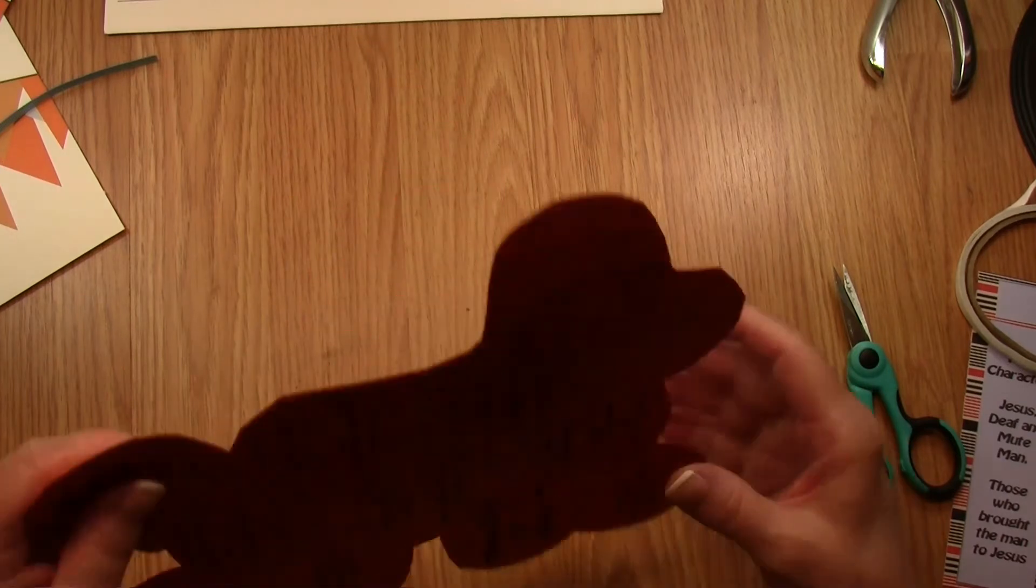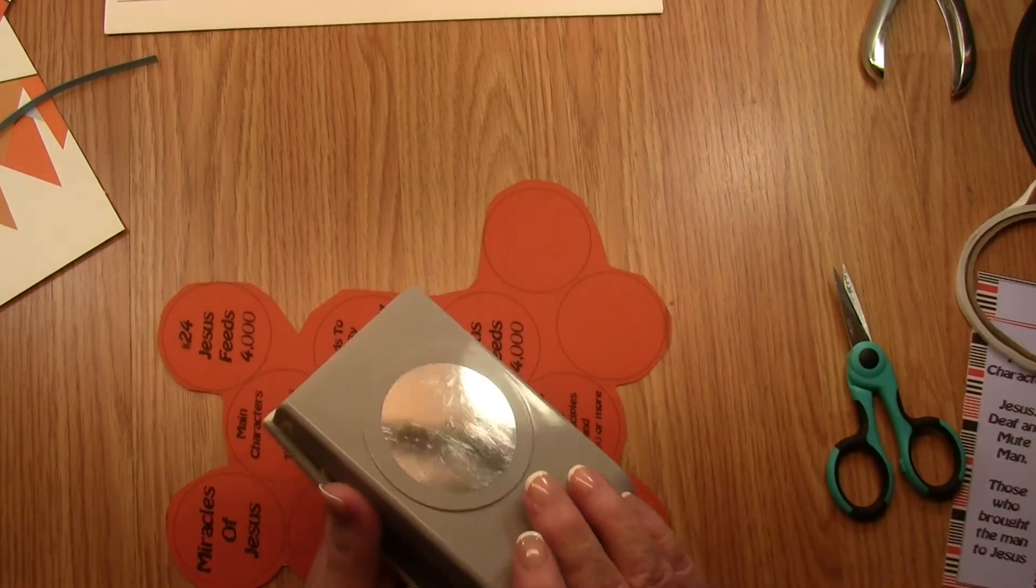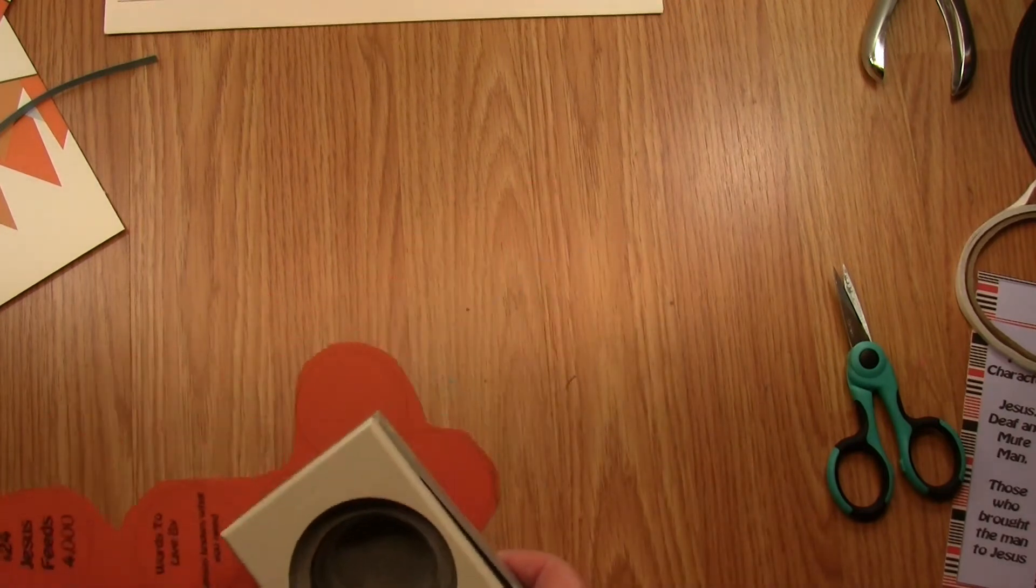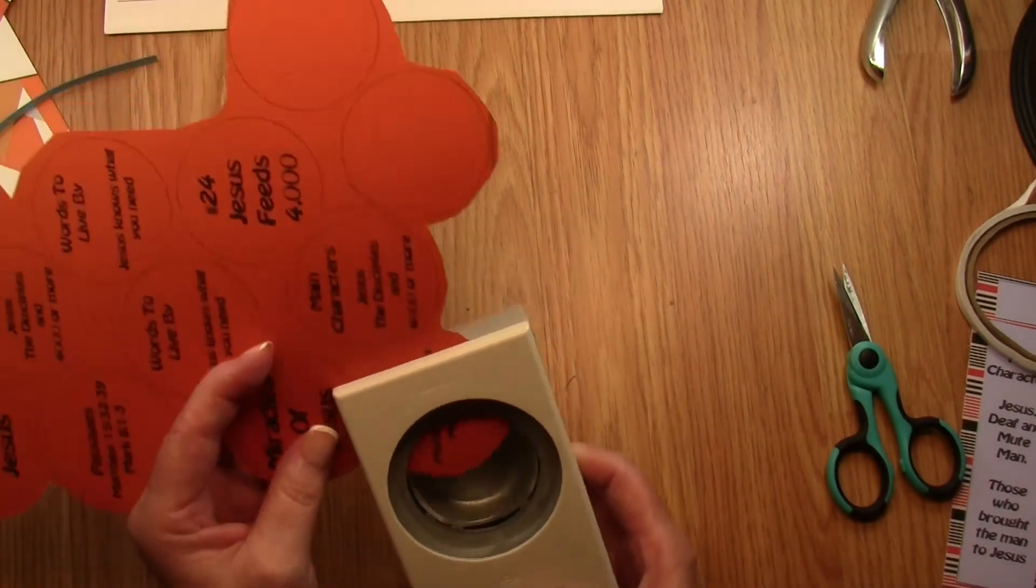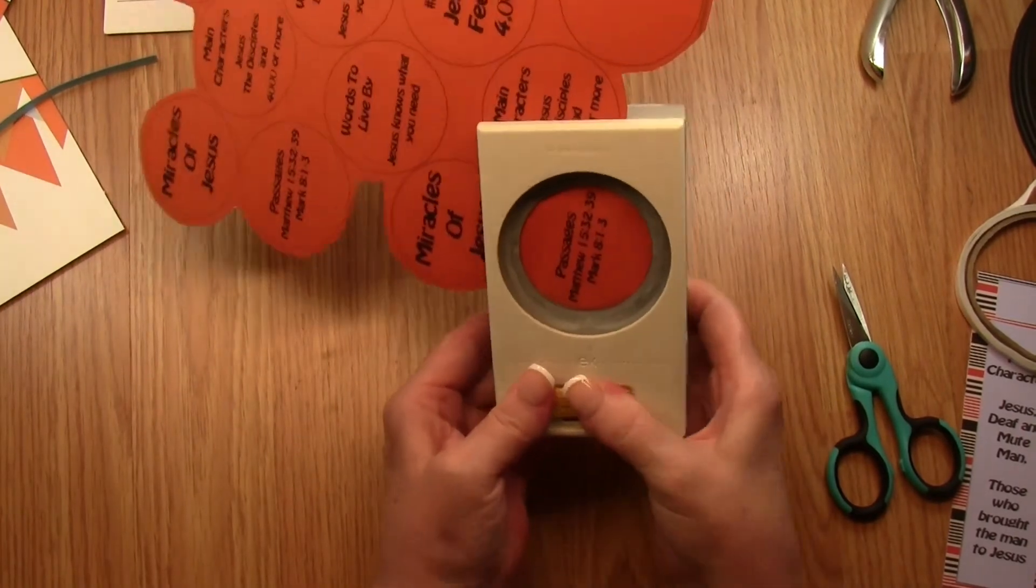After applying my tape, I'm going to cut them out with a two inch punch, and you can find a punch like this at any of your box stores like Hobby Lobby. So I simply put it through there and punch it out.